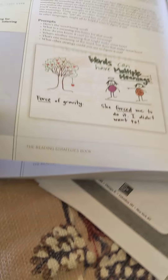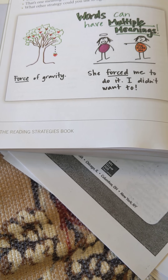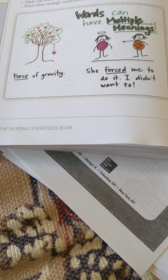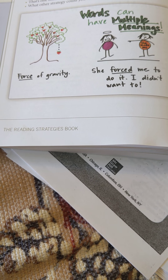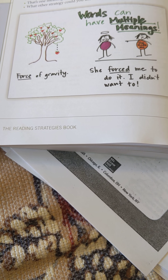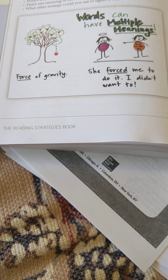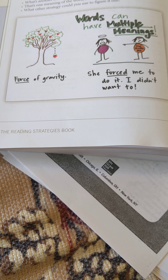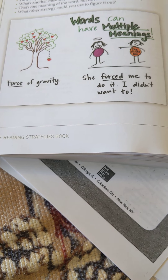The next strategy is going to be multiple meaning words. We've talked about these for years. Basically, these should be almost like a red flag to you when you're reading and you hear a word that you do know, but you think: hey, that really doesn't make sense in the context of the sentence. Could that word have a multiple meaning? Could it mean something other than what I normally think of it as? Words can have multiple meanings — do not forget that.